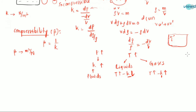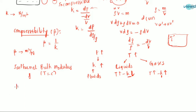There is a term called isothermal bulk modulus, which applies at constant temperature. The isothermal bulk modulus Ki is equal to the final pressure P, which equals rho RT. We know that PV equals mRT, and this can be written as P equals rho RT, so Ki equals P equals rho RT.